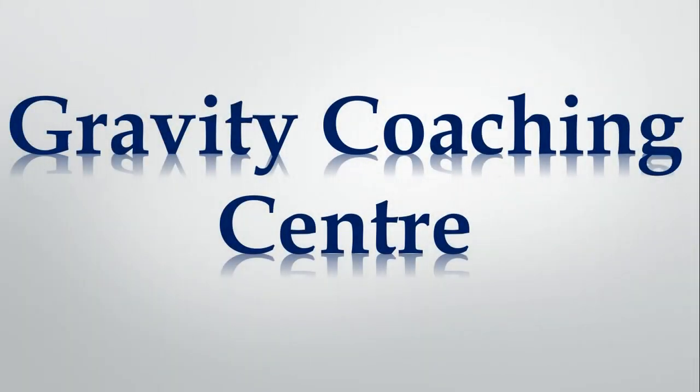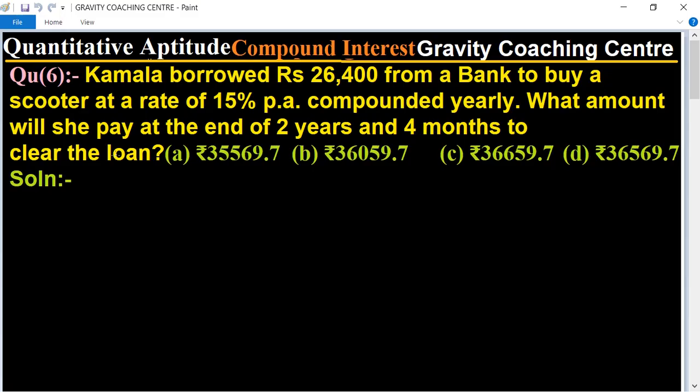Welcome to our channel Gravity Coaching Centre, Quantitative Aptitude chapter Compound Interest. Question number 6: Kamala borrowed rupees 26,400 from a bank to buy a scooter at a rate of 15 percent per annum compounded yearly. What amount will she pay at the end of two years and four months to clear the loan?